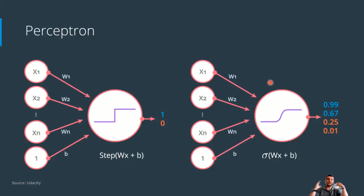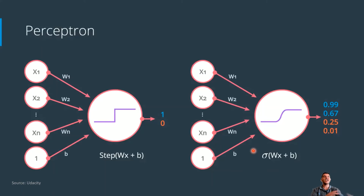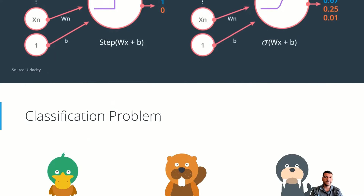In our perceptron, we were using the step function. Now we simply stop using it and replace it with the sigmoid function. For the same inputs, the same weights, and the same linear function, we change our decision-making from a discrete yes/no based on the result to the sigmoid function that gives us percentages — how likely we are to get something. This is what the sigmoid function will do for us, and it will be used vastly in machine learning and deep learning.